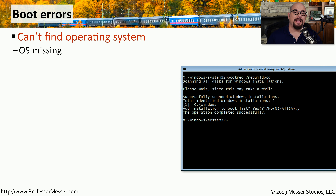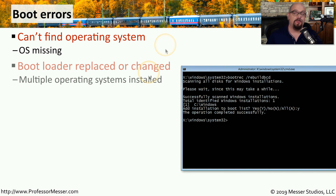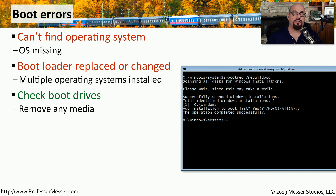If you turn on your computer and it's not able to find an operating system, you'll see a message identifying that the operating system may be missing. This can also happen if you've installed an additional operating system for dual booting, as the installation process may have modified or deleted the original bootloader. The issue may be simple — you may be trying to boot from a drive that doesn't have an operating system. If your BIOS is configured to boot from a DVD-ROM or USB drive, disconnect that media and try rebooting. Windows includes a startup repair utility that examines every step of the boot process and corrects any problems it finds.